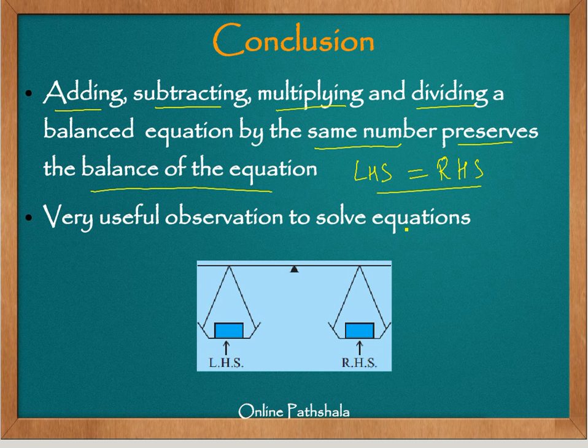And this is a very useful observation to solve the equations as we saw in the algebraic equations that we discussed. So essentially you can view the balance of the equation as a weighing scale. So you have a left hand side as is shown here and a right hand side. And this must be balanced, right. So this is what corresponds to the equal to sign.